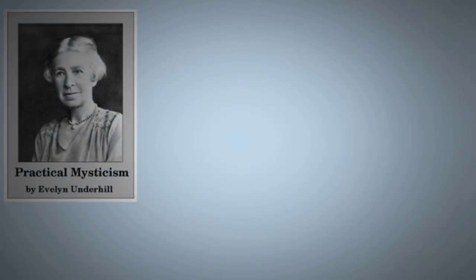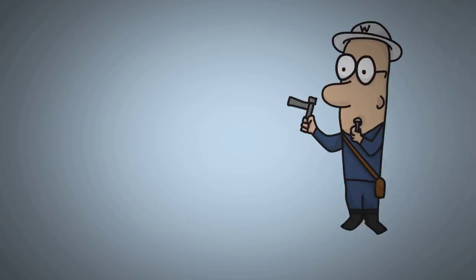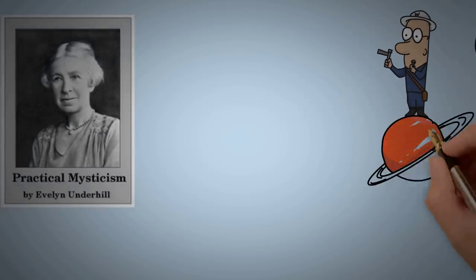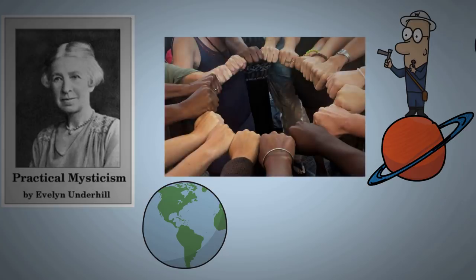Evelyn Underhill in her classic book Mysticism explains that I, me, mine makes of a man an isolated thing. Individuality creates limitations, which makes reality an illusion. Our natural state is being together and living in solidarity.